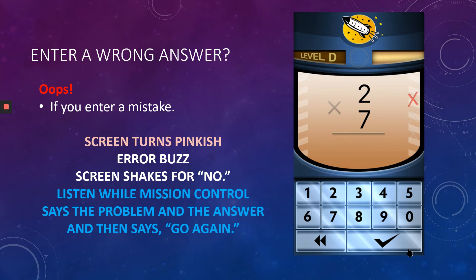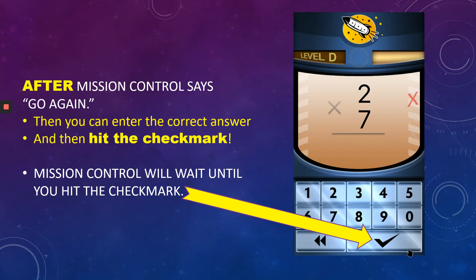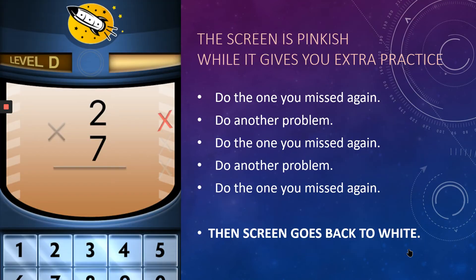What if you enter a wrong answer and you don't erase it? If you enter a mistake, the screen turns pinkish and you get the error buzz. The screen shakes its head no, Mission Control says the problem and the answer, then says go again. After that, enter the correct answer and hit the check mark — Mission Control will wait. The screen stays pinkish and gives you extra practice: do the one you missed, then another problem, then the one you missed again, then another problem, then the one you missed again. Make sure you know it — we want you to learn. Then the screen goes back to white.